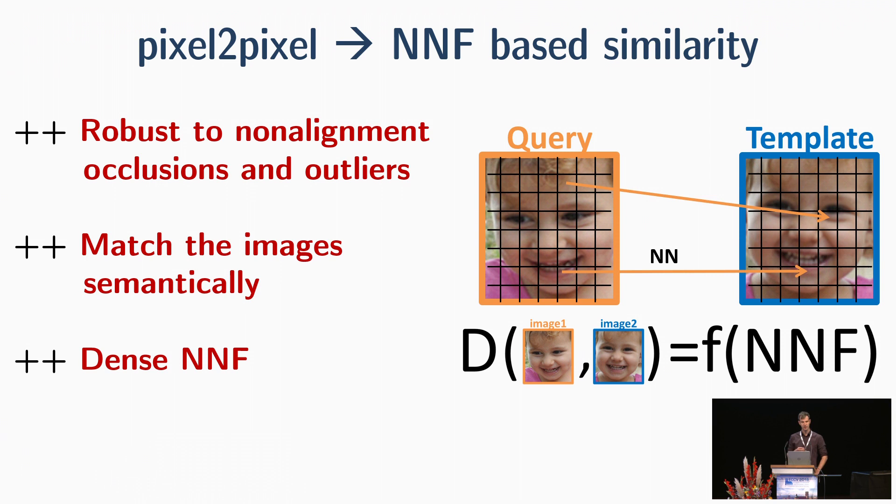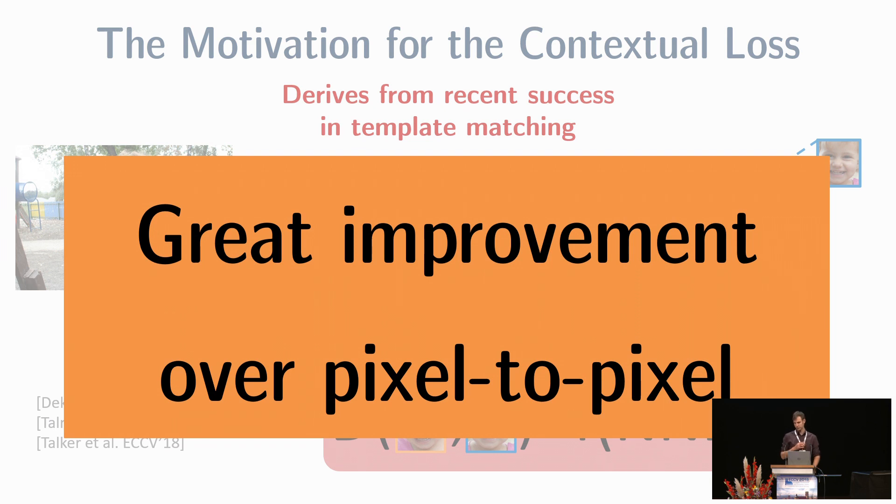In other words, it's shown greater improvement over pixel-to-pixel loss functions. The question is how to bring these ideas in a loss function term to train a convolutional neural network.